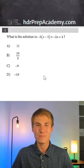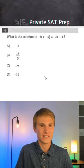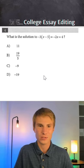Here's an SAT math tip that you can use to avoid making simple mistakes and also save time. To illustrate this, I'm going to use question number four. It says, what is the solution to negative three times the quantity x minus five is equal to negative two x plus four?